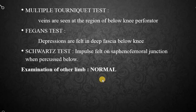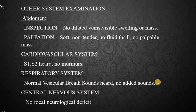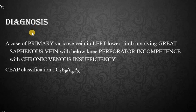You also have to examine the other limb, because there are more chances that the other limb will also have varicose veins. Abdominal examination is important because increased intra-abdominal pressure may have caused varicose veins — on inspection look for any dilated veins or swelling, and on palpation look for organomegaly. Auscultation: first and second heart sounds are heard, with no added sounds. Check for any neurological deficit in the central nervous system.